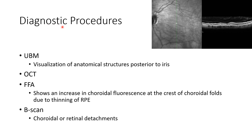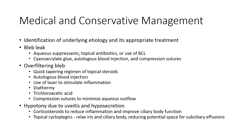Diagnostic procedures for hypotony maculopathy: ultrasound biomicroscopy can be done to visualize anatomical structures posterior to the iris. OCT is helpful in diagnosis and monitoring response to treatment — this picture shows OCT of a case showing choreoretinal folds. FFA will show increased choroidal fluorescence at the crest of choroidal folds due to thinning of RPE. B-scan can be done to rule out choroidal detachment or retinal detachment.